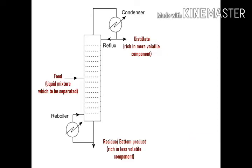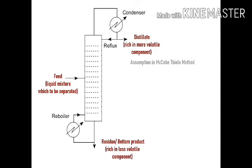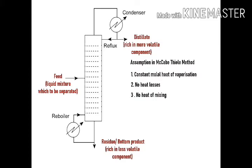To calculate the theoretical number of plates or trays for a specified degree of separation, the McCabe-Thiele method is used. There are some assumptions in this method: first, constant molal heat of vaporization; second, no heat losses; and third, no heat of mixing. Due to these three assumptions, on each tray the amount of liquid vaporized and the amount of vapor condensed will be the same, so the molal vapor flow rate and molal liquid flow rate in any section of the column remain constant.